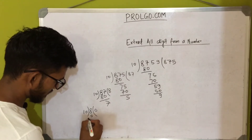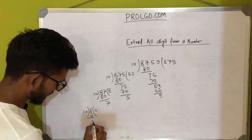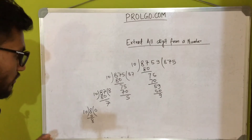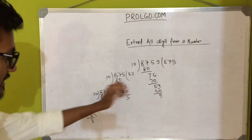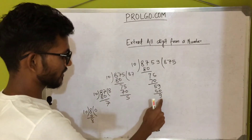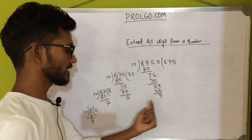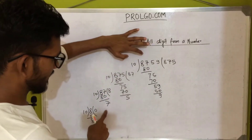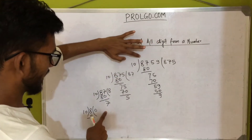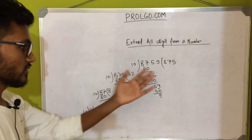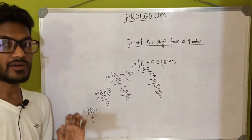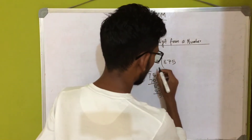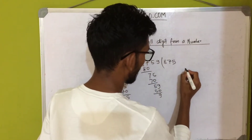If you notice, we got the remainders in order: first 9, then 5, then 7, and then 8. So this will be our approach while writing the program.